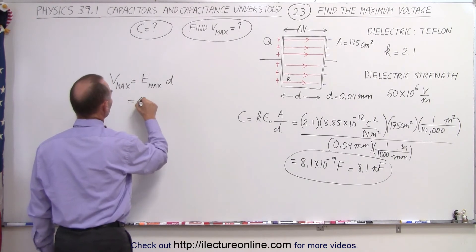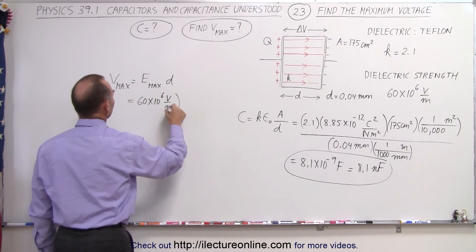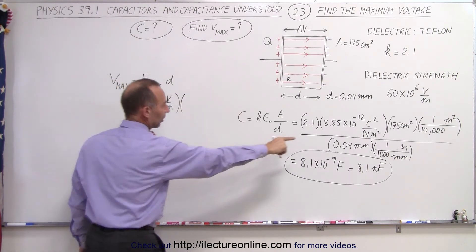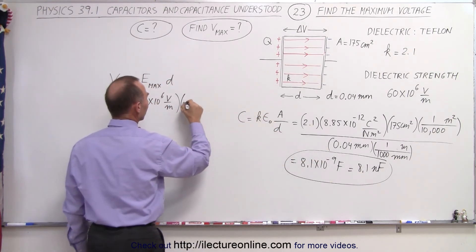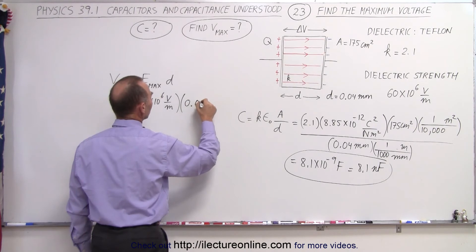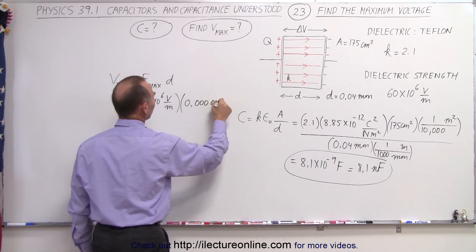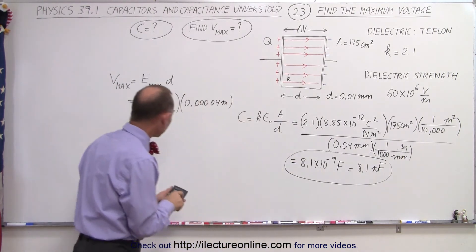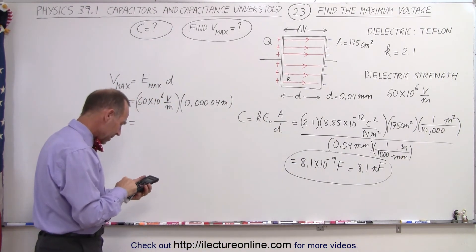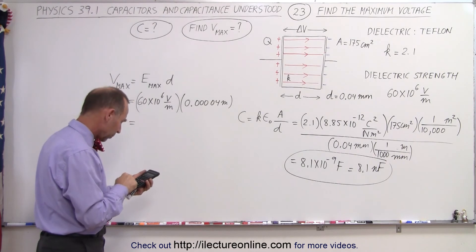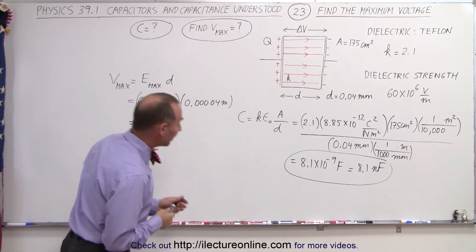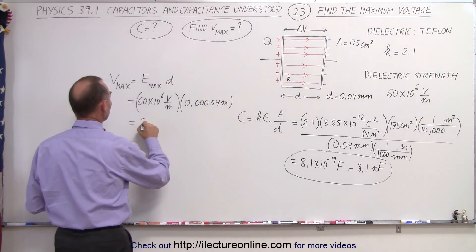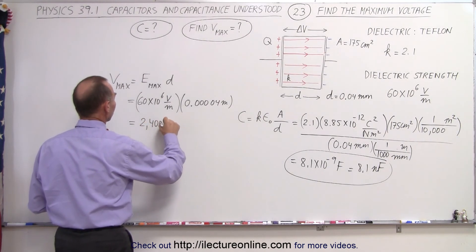So this is equal to 60 times 10 to the 6 volts per meter. And we multiply that times the distance between the plates in meters would be 0.0004 meters. So we have 60 e to the 6 times 0.0004 equals, and the answer is not more than 2,400 volts.